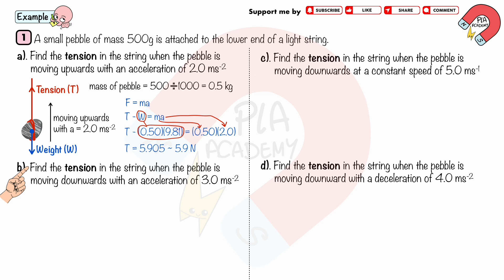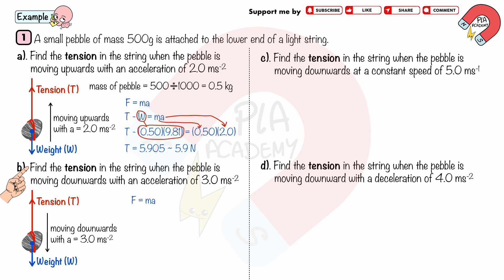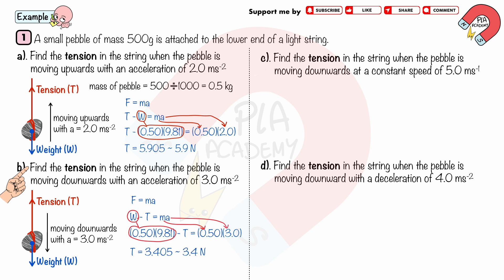Part b: Find the tension in the string when the pebble is moving downwards with an acceleration of 3 m/s². The resultant force acts downward, so F = W − T = ma. Substituting W = 0.5 × 9.81, m = 0.5, and a = 3, we solve to get T = 3.4 N (2 significant figures).